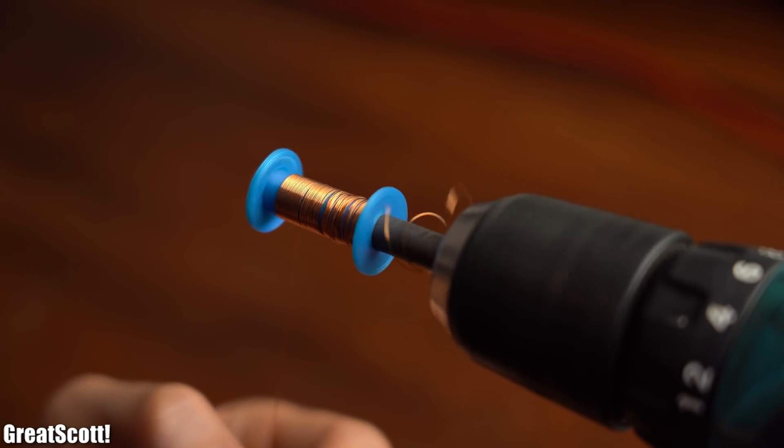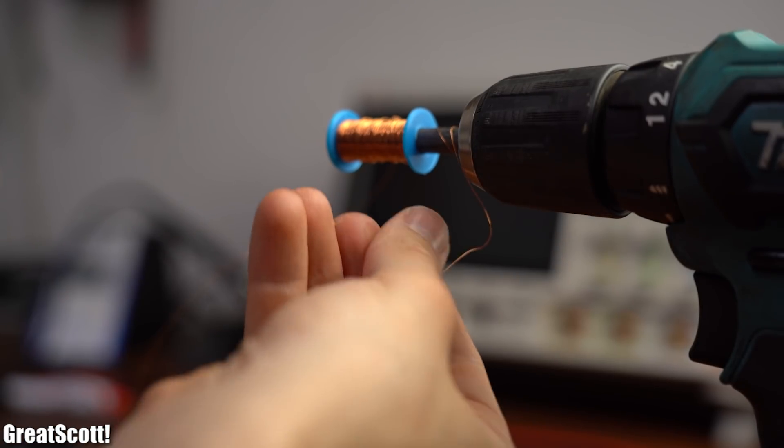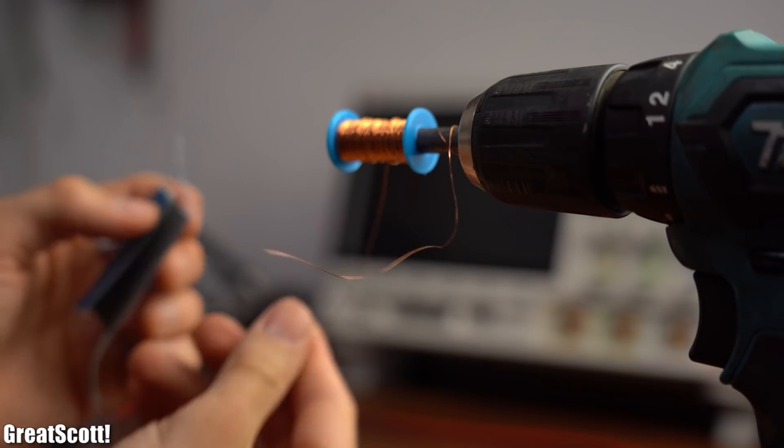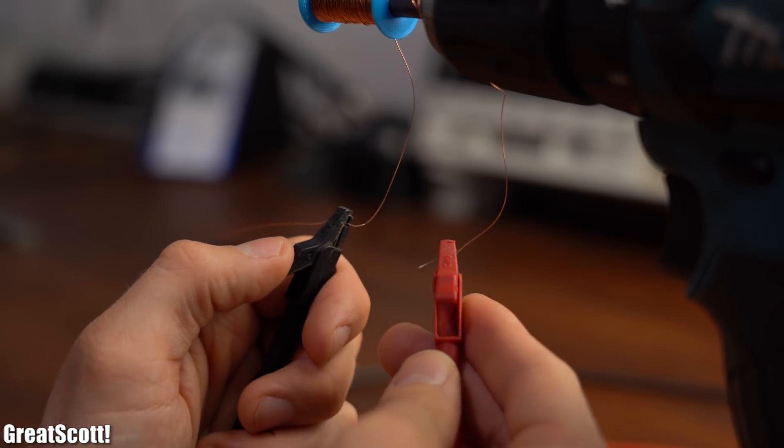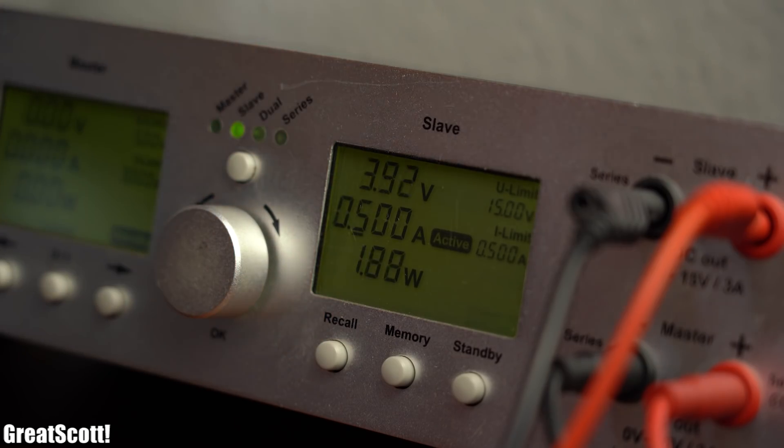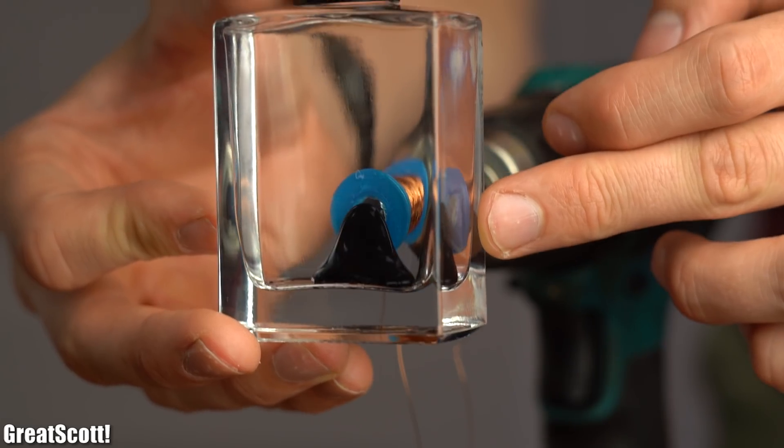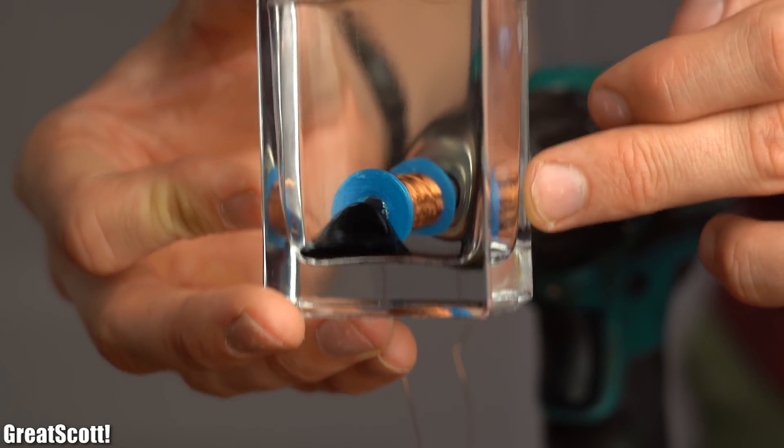To determine the perfect amount of loops I stopped winding from time to time, removed a bit of the varnish from the copper wire with sandpaper, hooked up my lab bench power supply, limited the current to half an amp which this wire size can handle and tested whether I was happy with the magnetic field strength which I was not yet.